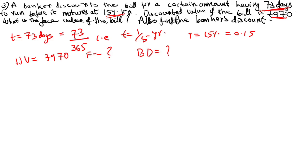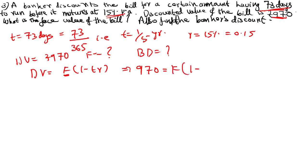Using the formula DV equals F × (1 minus t×r) — because we know t×r as well as DV, and the question is face value. So: 970 equals F × (1 minus (1/5) × 0.15). Simplifying using a calculator, F value is equal to rupees 1000.